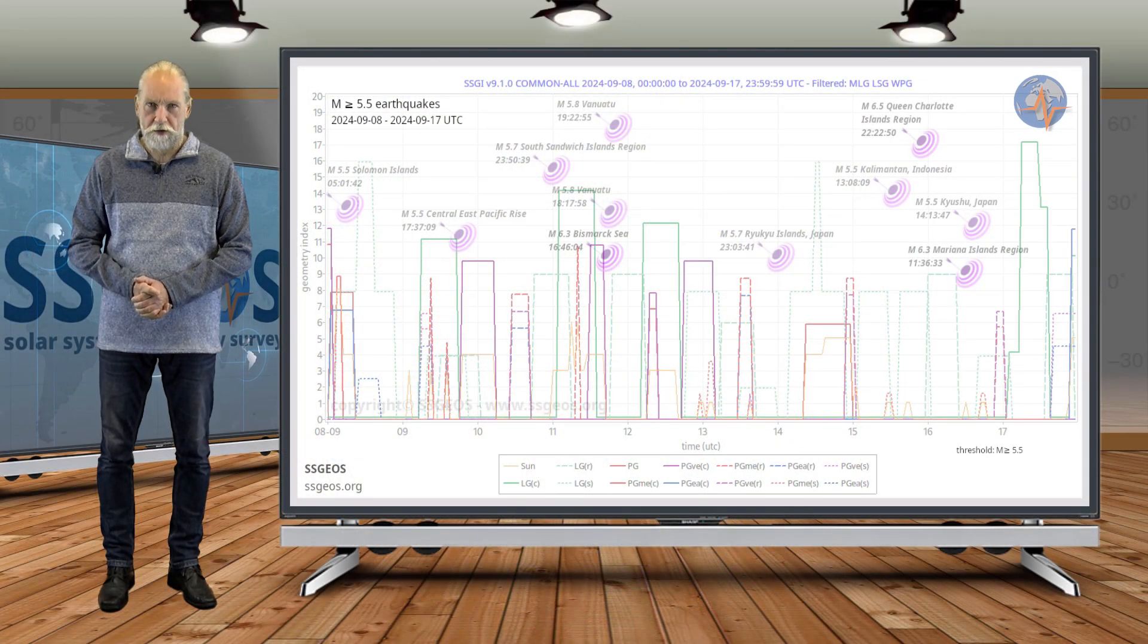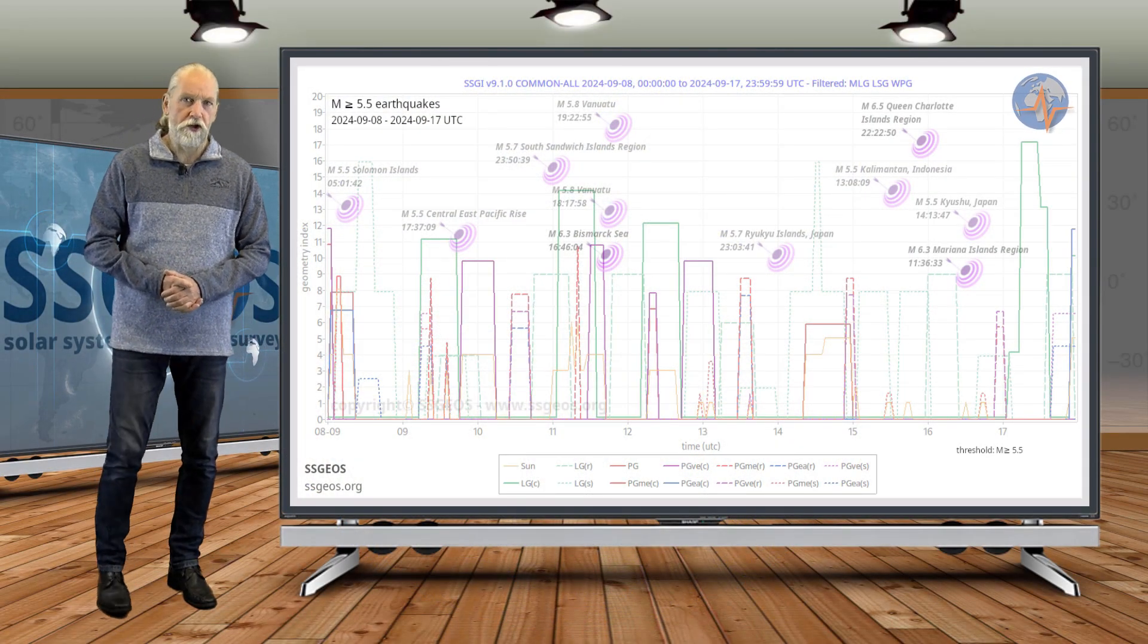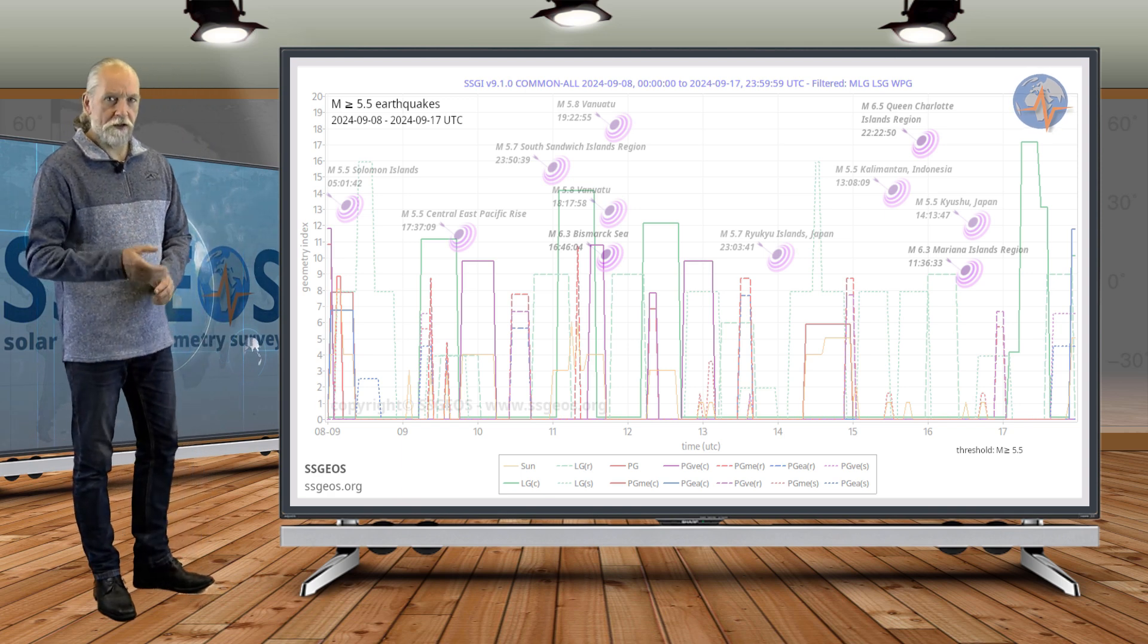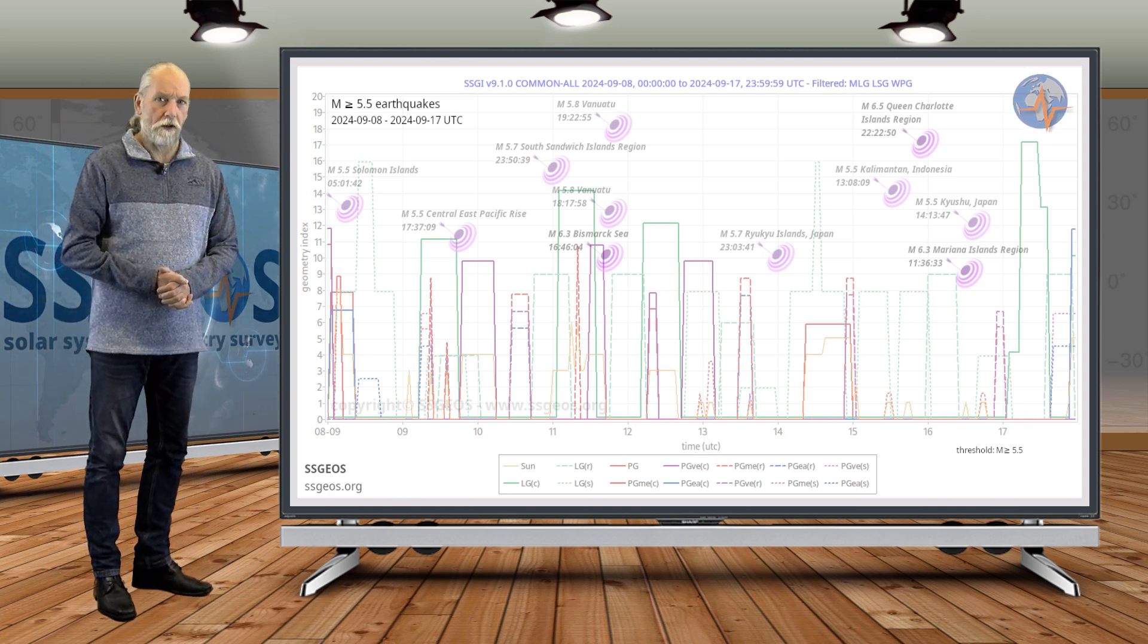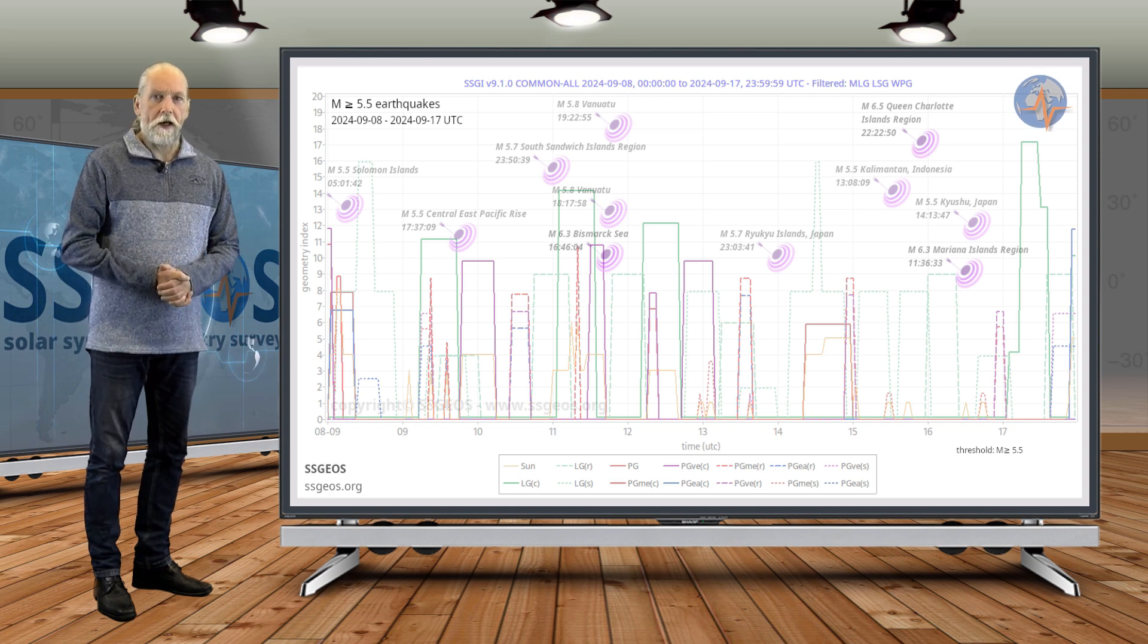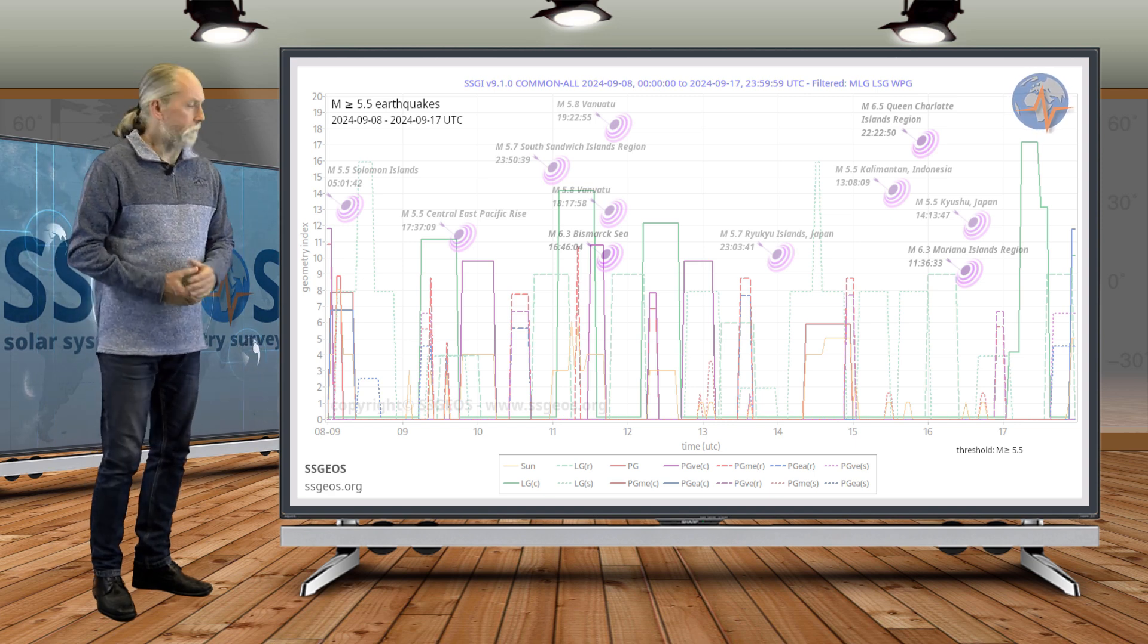Welcome to a new planetary and seismic update. You're looking at the SSGI graph from the previous time frame with 5.5 and larger earthquakes, and as we anticipated, we had seismic activity above average.